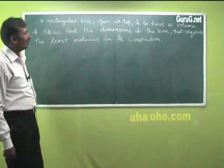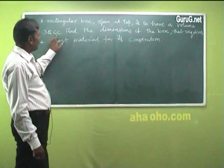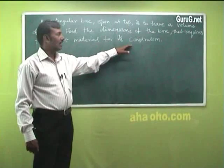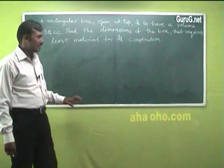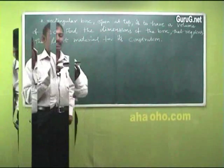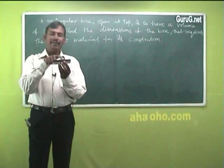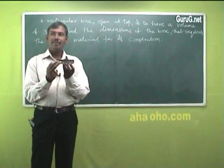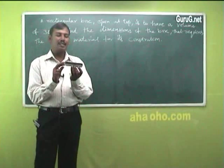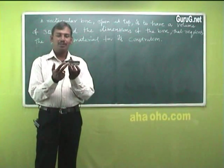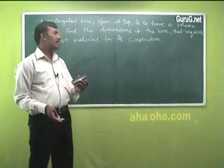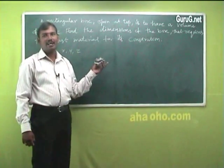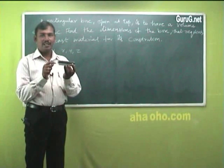Next problem: A rectangular box open at the top is to have a volume of 32 cubic centimeters. Find the dimensions of the box that require the least material for its construction. When material is minimized, we minimize the surface area of the box. Let x, y, z be the length, breadth, and height of the rectangular box.